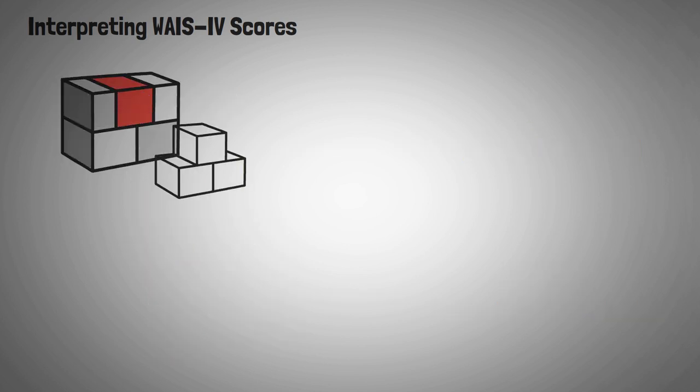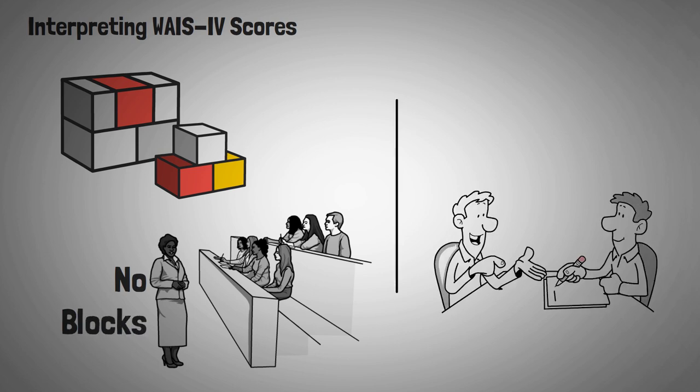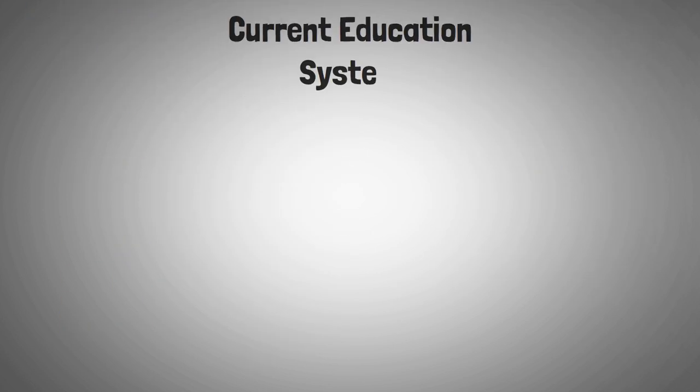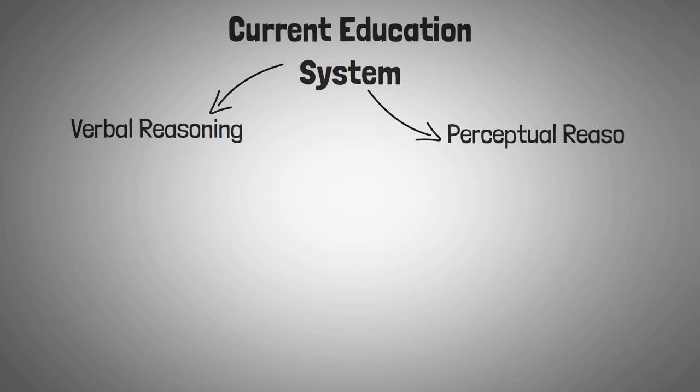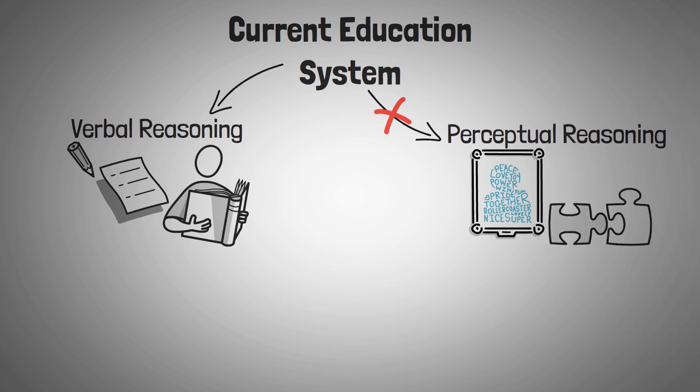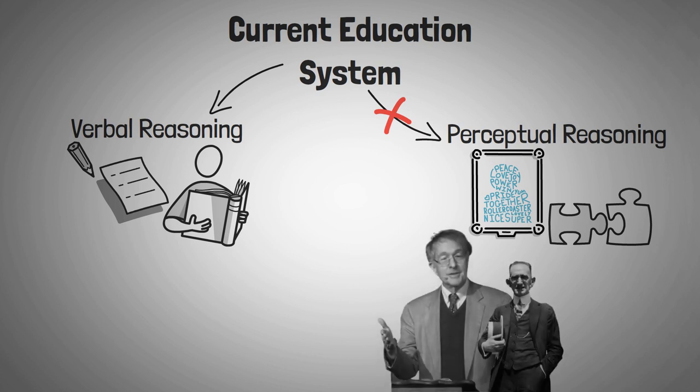While you may be able to find blocks on an IQ test, you might not see them in the classroom past preschool. College admissions officers don't require students to put together puzzles in order to be accepted. Our current education system values verbal reasoning over perceptual reasoning. Tests ask you to read and write before they ask you to construct a photo or find the missing puzzle piece. But verbal linguistic intelligence is just one form of intelligence, according to Howard Gardner. And according to Lewis Thurnstone, verbal comprehension and word fluency are just two skills that contribute to overall intelligence.